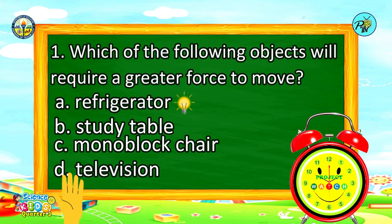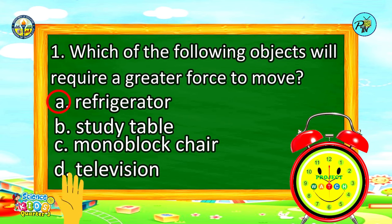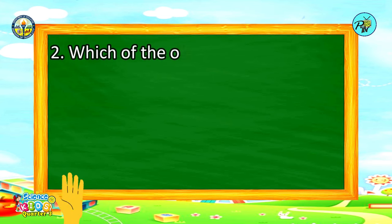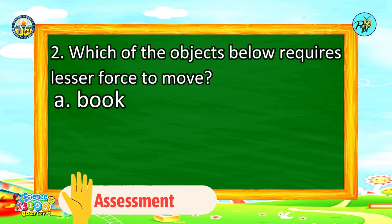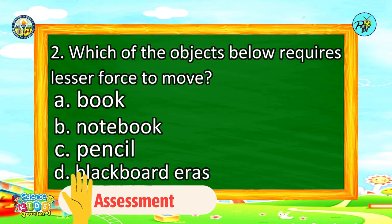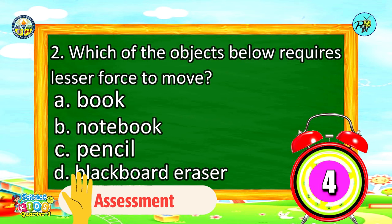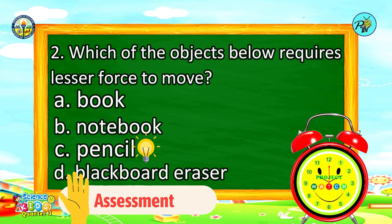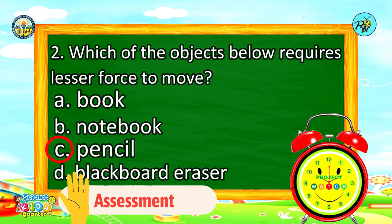Time's up! Now let's check your answer. If your answer is letter A — Refrigerator, that's correct! Number 2: Which of the objects below requires lesser force to move? A. Book, B. Notebook, C. Pencil, D. Blackboard eraser. Time's up! The correct answer is letter C — Pencil.